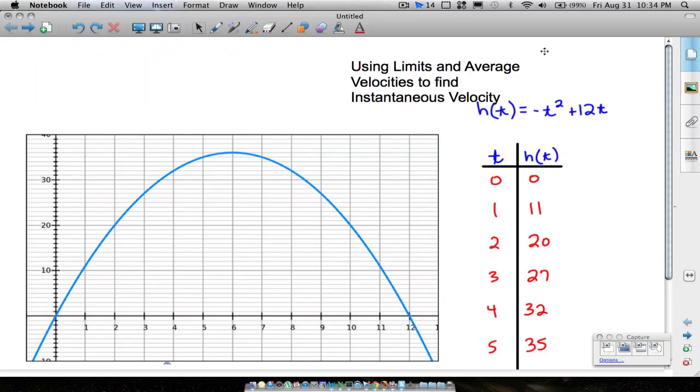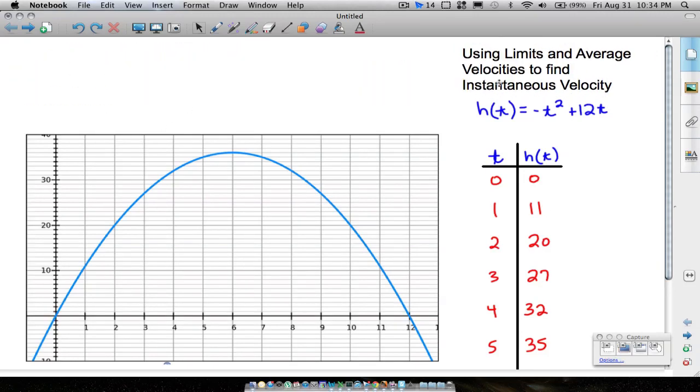All right, in this video we're going to use some limits and average velocities to find an instantaneous velocity at a certain time. And we've got this function here. This function represents a height at some time of an object that's launched off the ground.